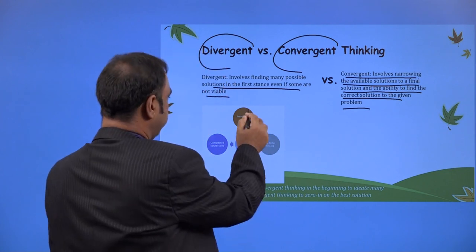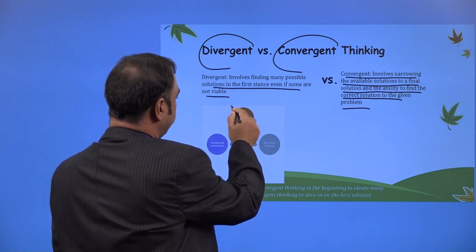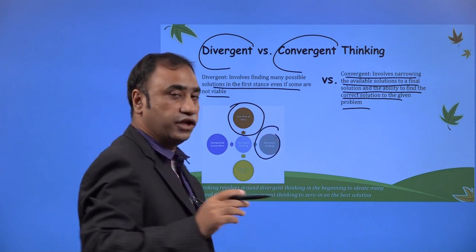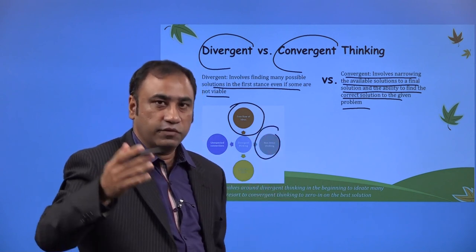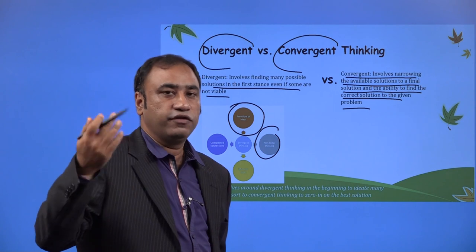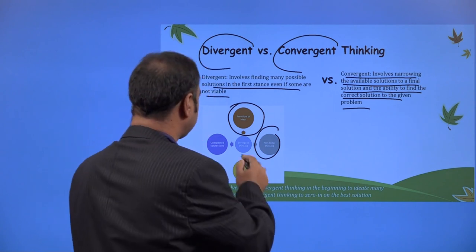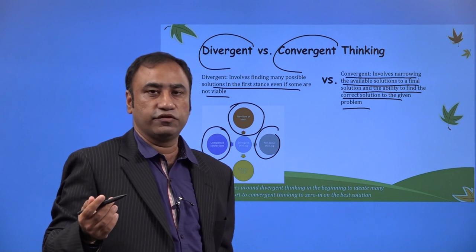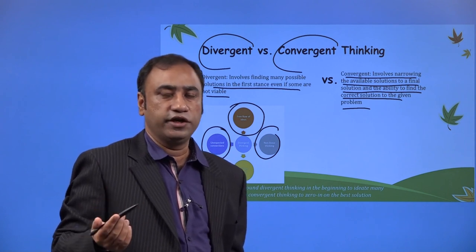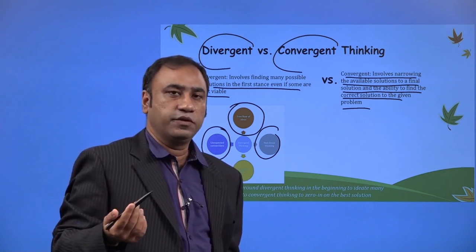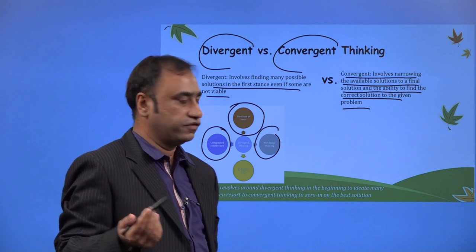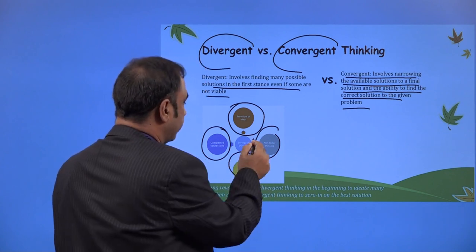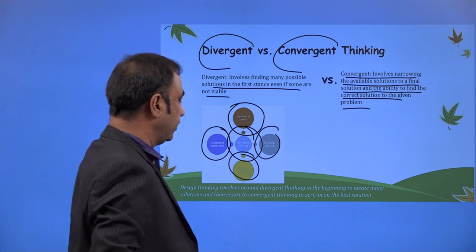The cycle happens: in divergent thinking, free flow of ideas happens. Non-linear thinking — we don't think in only one direction, we think in multiple directions to brainstorm new ideas. There might be unexpected connections, or there might not be any connection at all, because when we think in a non-linear way we are thinking in multiple directions. That is where divergent thinking happens.